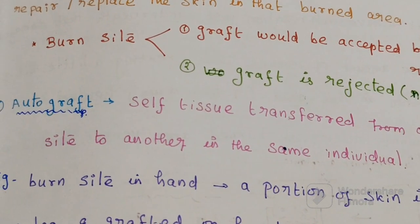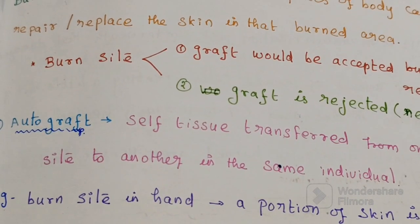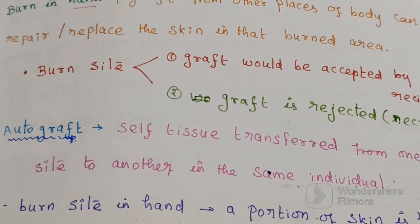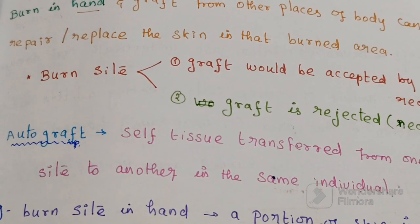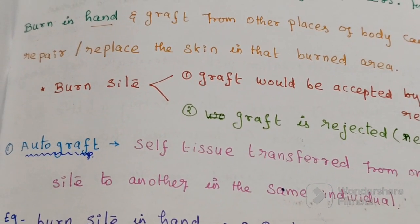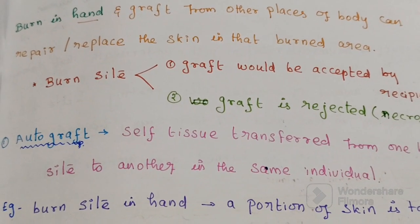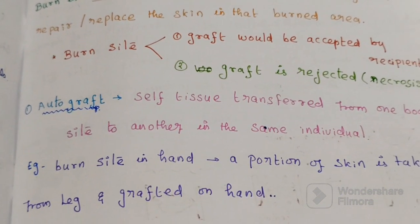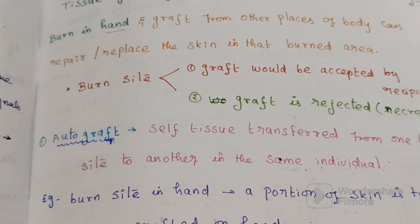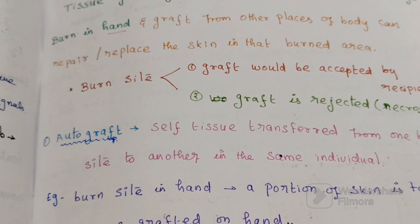Here is an example of a burn site. One possibility is the graft would be appropriate — it won't be rejected and is accepted by the recipient, leading to healing after grafting. There is another possibility as well: that it did not heal, the graft is rejected, and necrosis happens in that particular region. Our question is why sometimes the graft is rejected and why sometimes it is accepted.